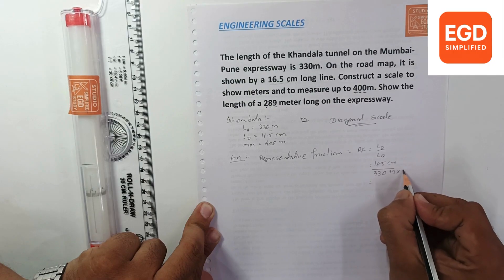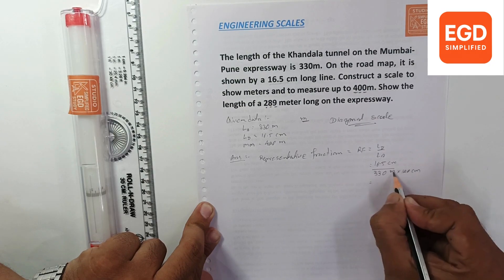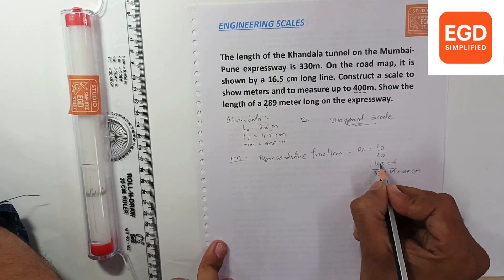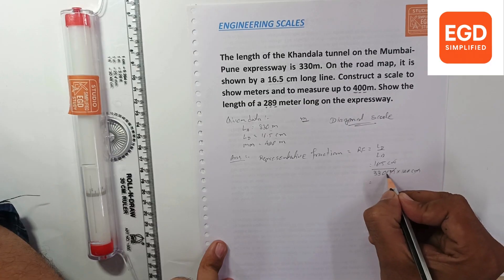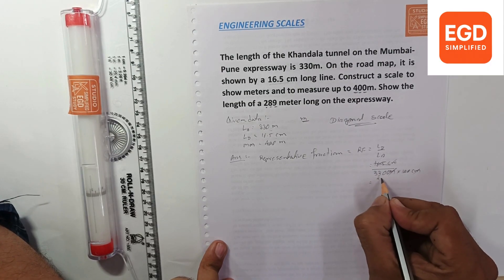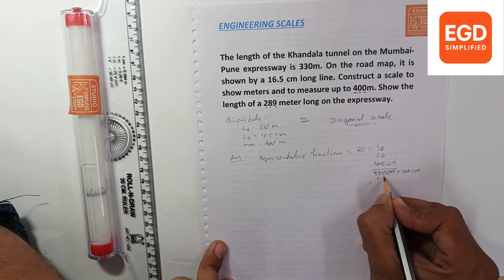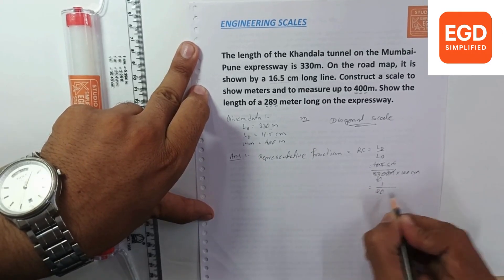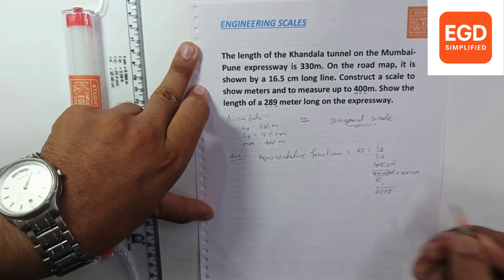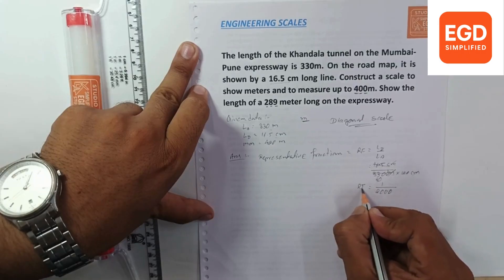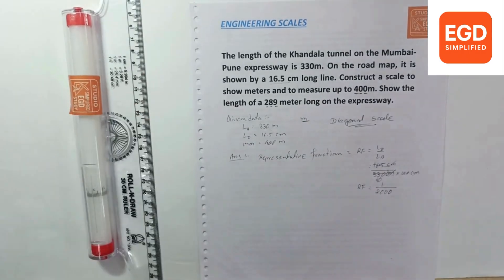It is in meters. Convert this into the same unit, convert this into centimeters. So we will multiply by 100. Centimeters cancel. Remove this point. So 165 into 2, that will give us 330. This is 1 upon 2000. So RF is 1 upon 2000.